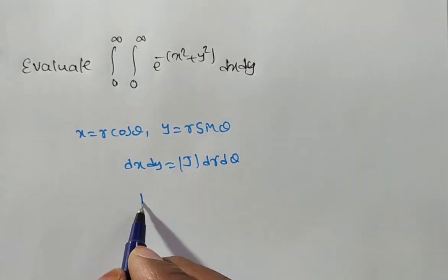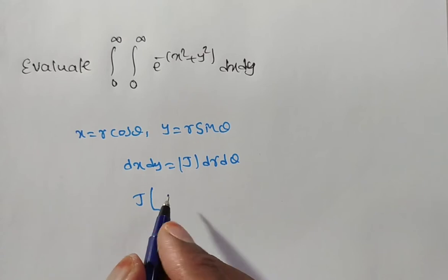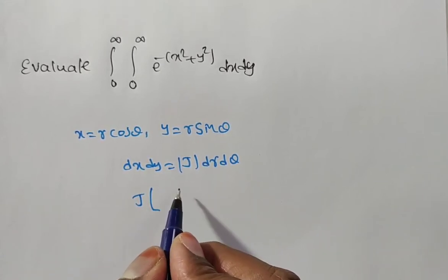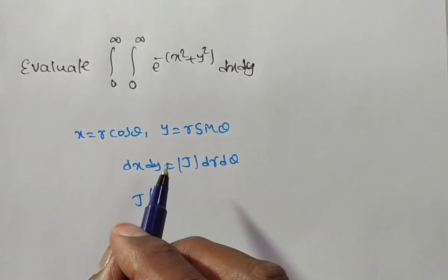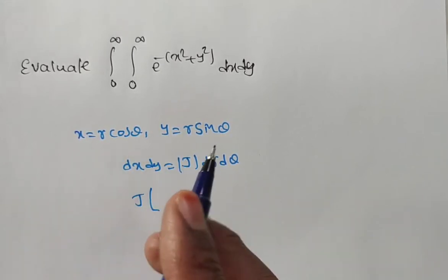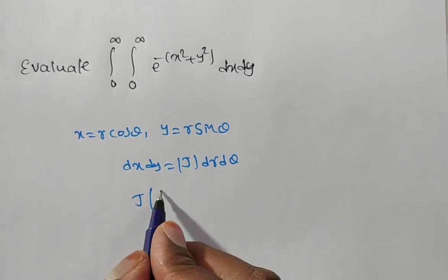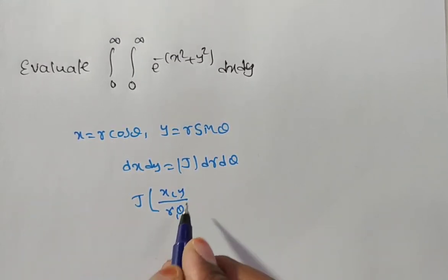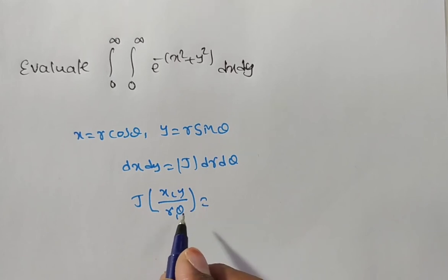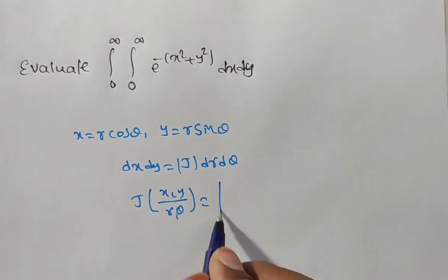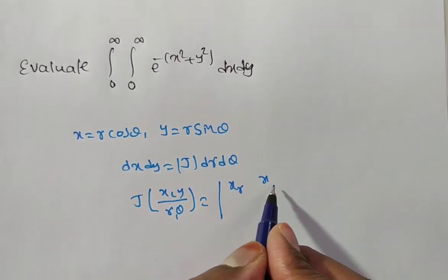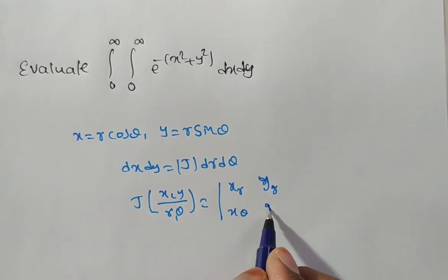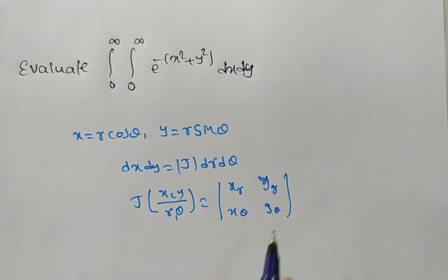What is the Jacobian? The Jacobian is a transformation from one variable to another variable. We have the variables x, y and we are changing into r, theta. It gives the Jacobian — that is: x with respect to r, y with respect to r, x with respect to theta, y with respect to theta.